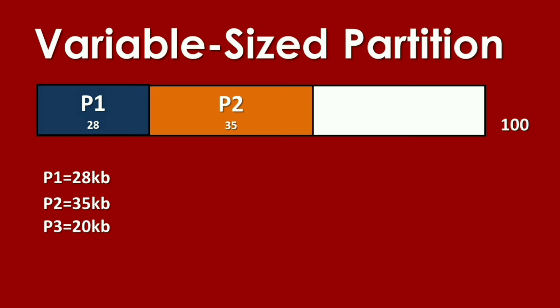Process 3 can still fit, it can still be allocated in the memory. Here, we will have a free size of 17. In variable size, Process 3 was accommodated. That's the beauty of variable size. Because we don't have internal fragmentation like in Process 1. There's no excess, no unused memory.